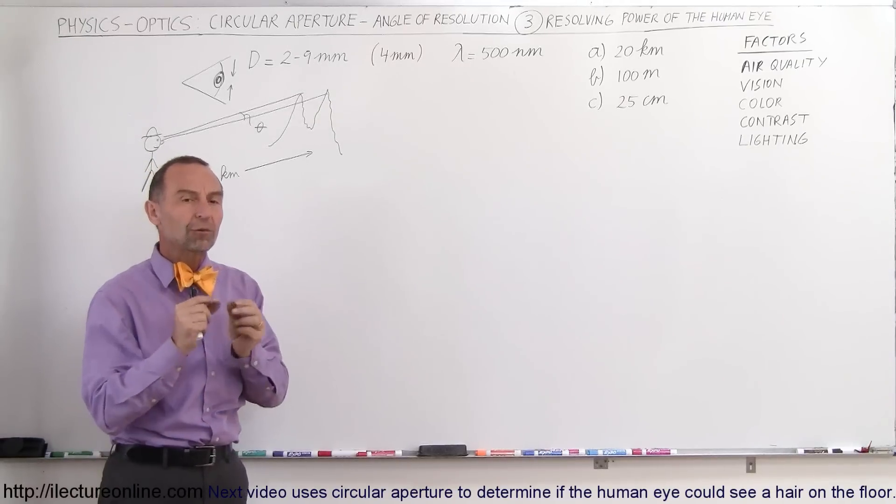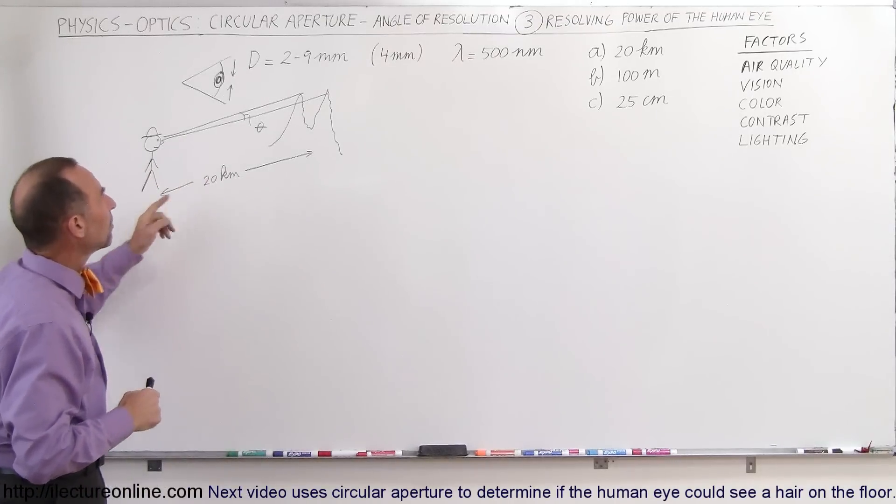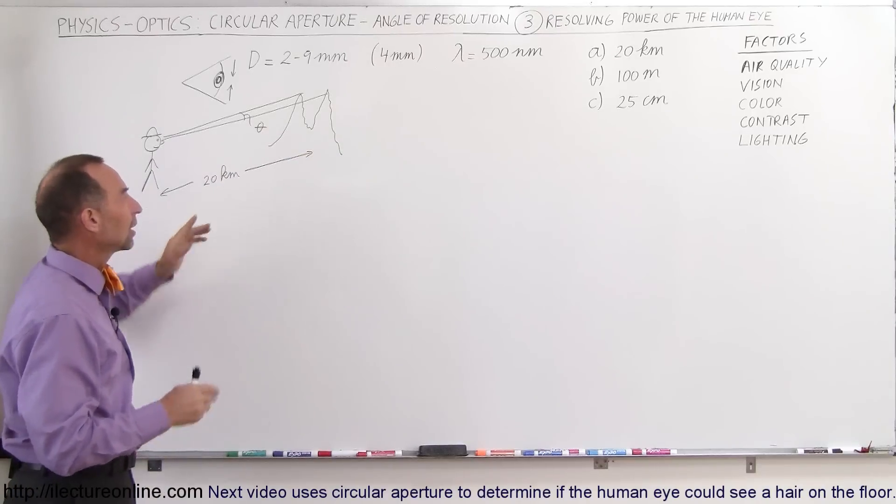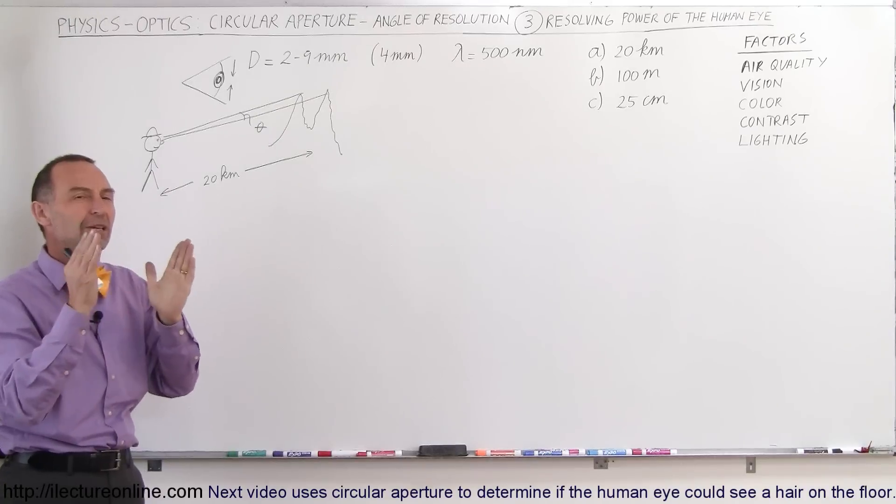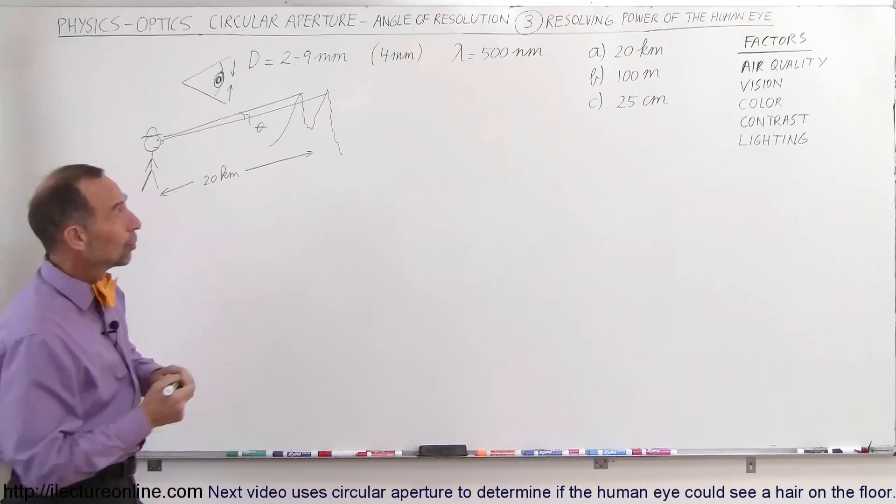the resolution of 25 centimeters, which is the typical reading distance of a person. Alright, what can we resolve? What can we see? What can we separate at a distance? So let's say we're looking at a mountain or two peaks of a mountain at a distance of 20 kilometers. How far away can those peaks be so we can still distinguish them as two separate peaks? And well, in order to do that,